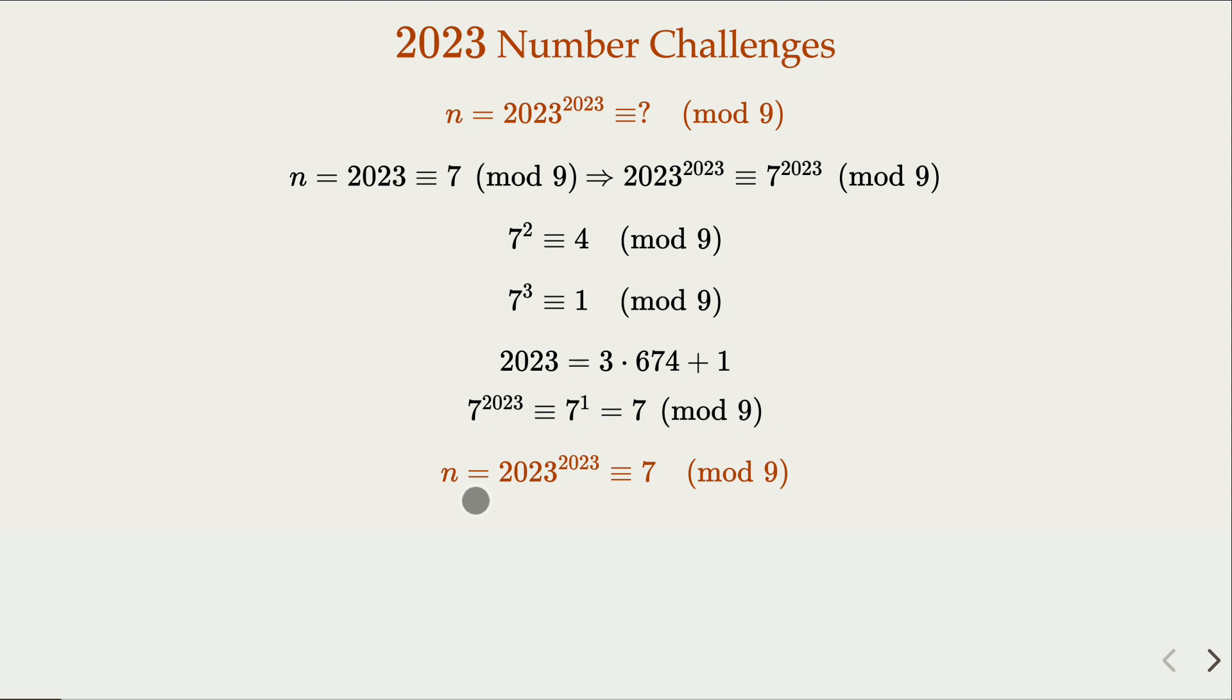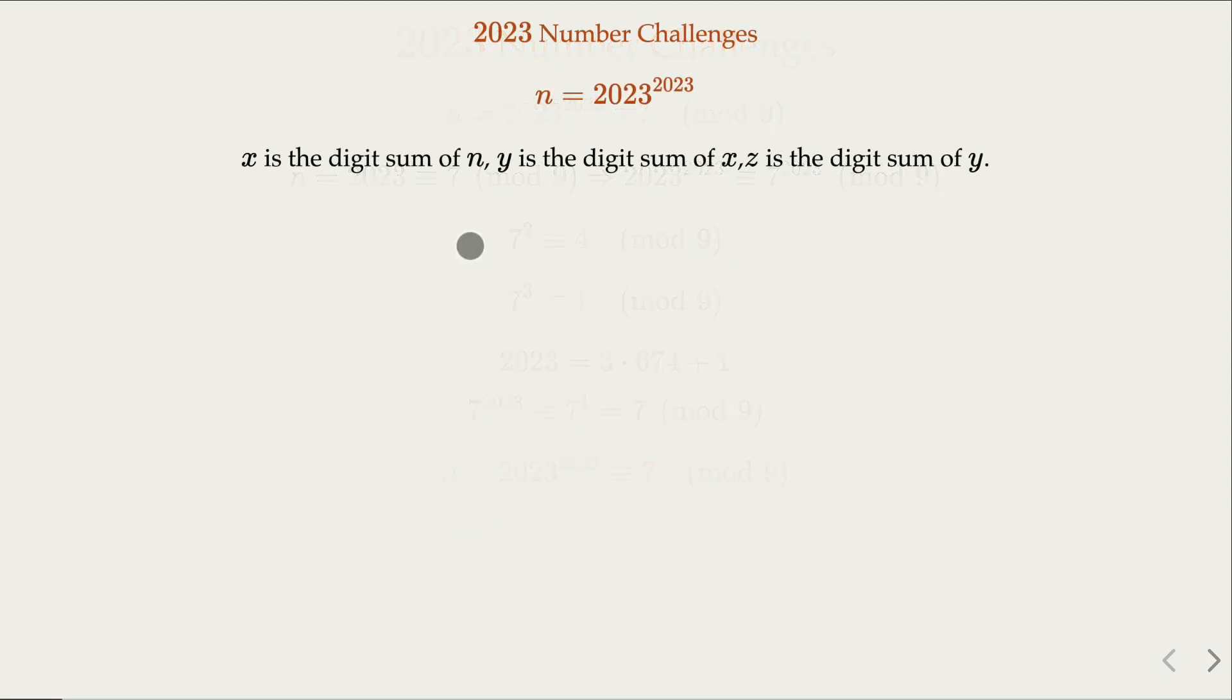So now how do we narrow down the value for x? We know that x, y, z all congruent to 7. The range of x has to do with number of digits in n. As a next step, we need to figure out how many digits does n have in order to figure out the range of x. Let's do that.